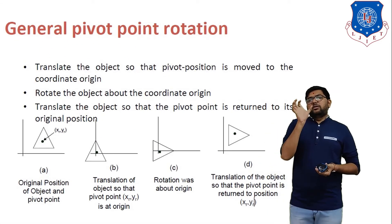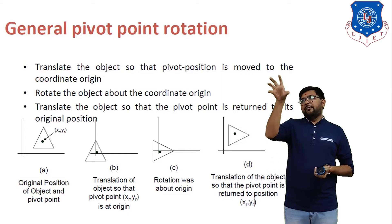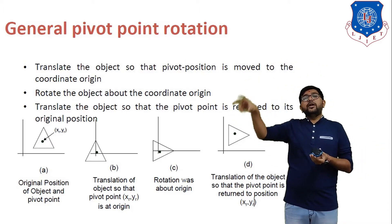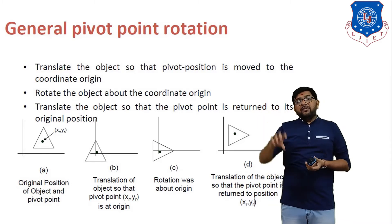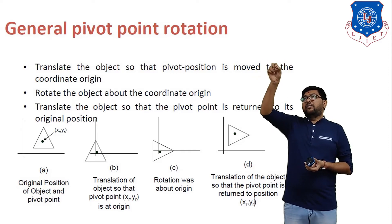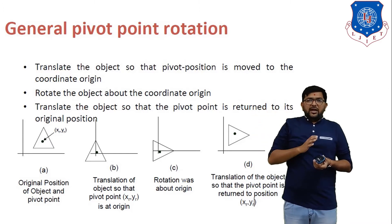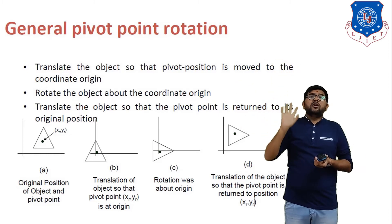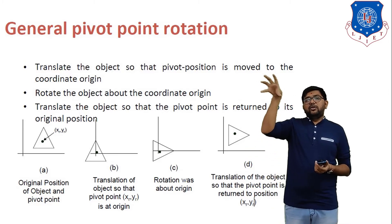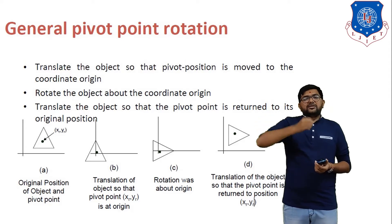Now we explain a new method: general pivot point rotation. In rotational geometric transformation, we normally rotate any object about the origin. But suppose we have triangle ABC and we want to rotate it from point A in the clockwise or anticlockwise direction — we don't have an equation for rotation about an arbitrary point. So we first translate the triangle to the origin, rotate it, and then translate it back to its actual position.